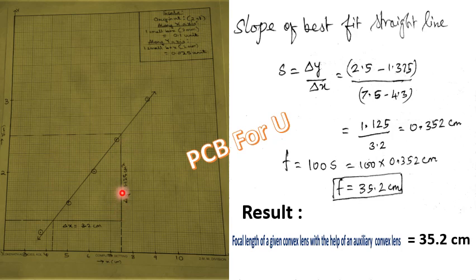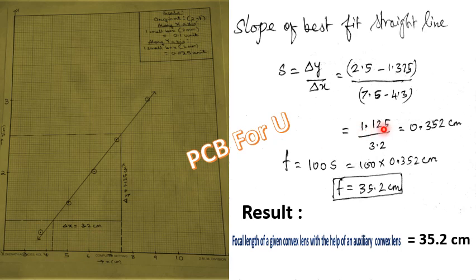The difference is Δy. The difference is 2.5; the difference is 1.375; the difference is 1.125. Δx is 7.5; differences are 4.3, 3.2, 3.2, and 0.352 cm. F equals 100s over 0.352 cm, giving all over 35.2 cm. So the focal length of the given convex lens with the help of an auxiliary convex lens is 35.2 cm.